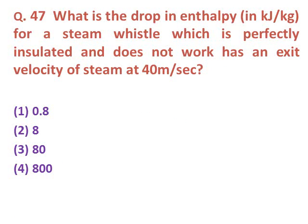Question forty-seven: What is the drop in enthalpy in kJ/kg for a perfectly insulated steam nozzle that does no work and has an exit velocity of 40 m/s? Using the formula V²/2000, the result is 0.8 kJ/kg — option one.